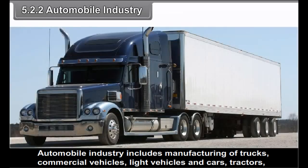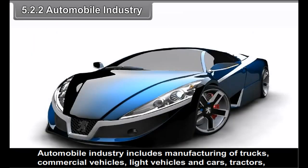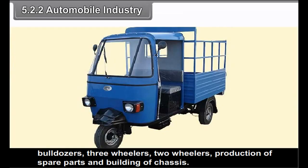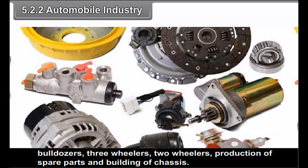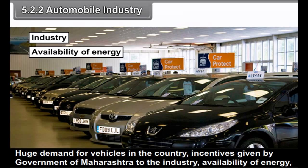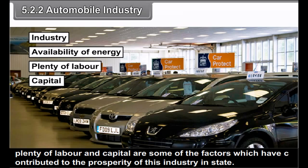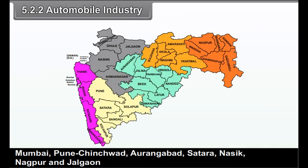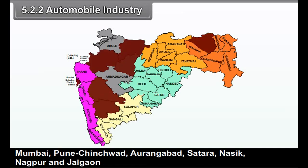5.2.2 Automobile Industry: The automobile industry includes manufacturing of trucks, commercial vehicles, light vehicles and cars, tractors, bulldozers, three-wheelers and two-wheelers, production of spare parts and building of chassis. Huge demand for vehicles in the country, incentives given by the Government of Maharashtra, availability of energy, plenty of labour and capital are factors contributing to the prosperity of this industry. Mumbai, Pune, Chakan, Aurangabad, Satara, Nasik, Nagpur and Talegaon are the main centres of automobile industries.